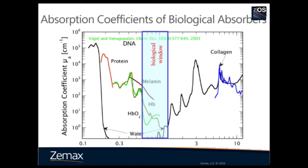Spectrum is one of the most important parameters in biomedical imaging, and one of the first parameters you need to determine when designing an optical system. These figures show the absorption coefficient of different tissue components as a function of wavelength. Absorption is dominated by protein and DNA in the UV range, by water in the infrared, and by hemoglobin and melanin in the visible. Because of low absorption in the near-infrared region, this window is often called the biological window. Most imaging systems use wavelengths in the visible to near-infrared range, for example 1.5 microns.